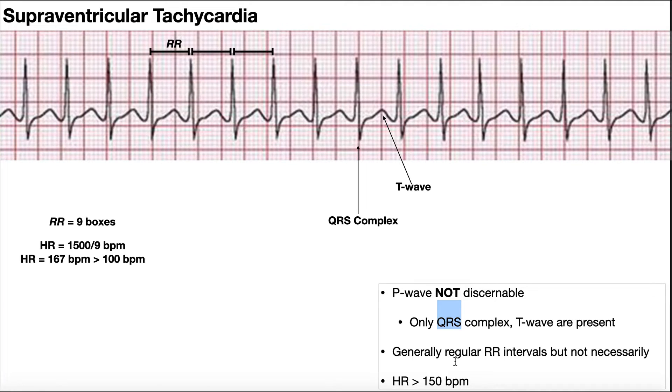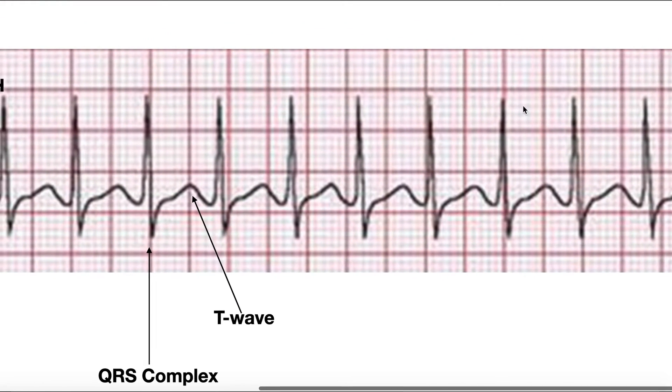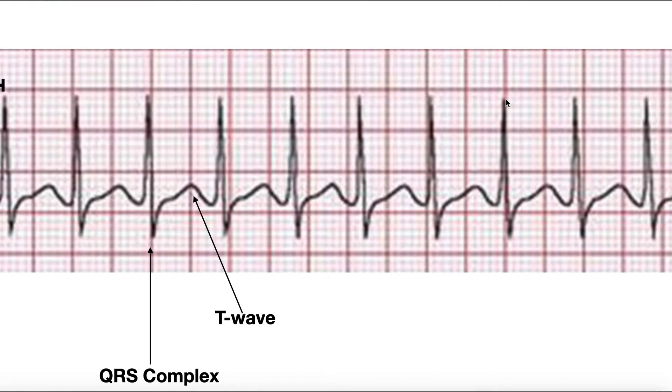Also, generally, the R-R intervals are regular, but not necessarily, but generally they are regular, and so we can use that to calculate the heart rate to ensure that it is above 150 beats a minute. We do the same thing as before. We make sure it's regular, and then we look for one of these peaks on a solid dark line. This is probably the best one over here on the right. You don't have to do this, but it makes it a little bit easier to count the small boxes in between the two peaks.